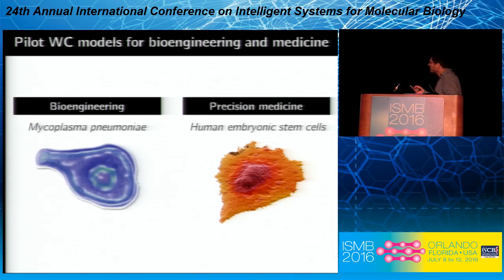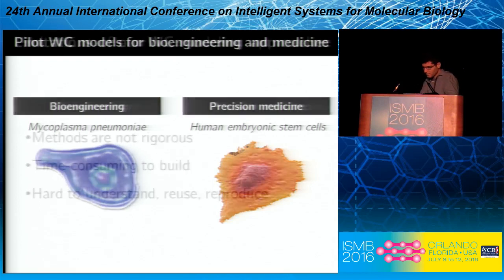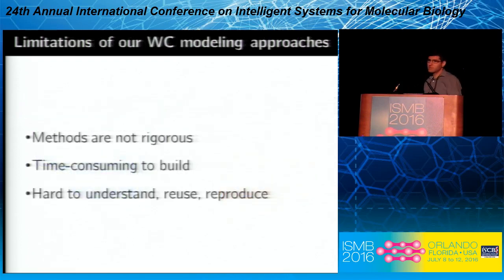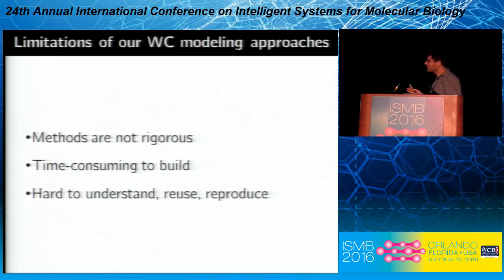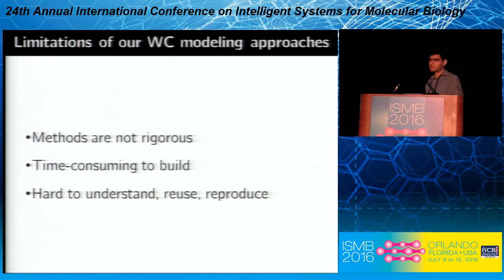The second project is to pilot the first wholesale models of human cells using human embryonic stem cells. To build wholesale models that can really drive bioengineering and medicine, we need models which are much larger and much more accurate than the wholesale model we have today of mycoplasma genitalium. We need to systemize, formalize, and accelerate all aspects of wholesale modeling that we've been developing in ad hoc ways over the last several years.